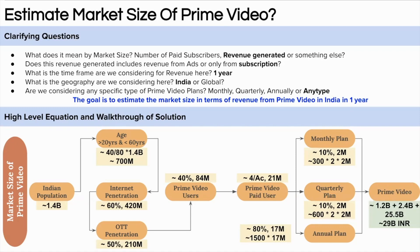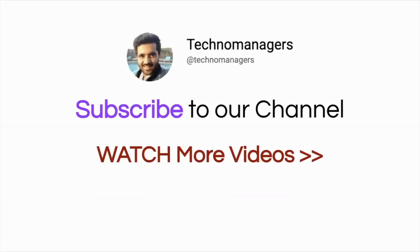That is the estimated annual subscription revenue of Amazon Prime in India — approximately 29 billion rupees. You can convert to dollars accordingly. I hope you learned something new from this video. If you have any doubts, please comment in the comment section, and please download the guesstimate ebook from the link in the description box. Till then, keep learning and keep watching.